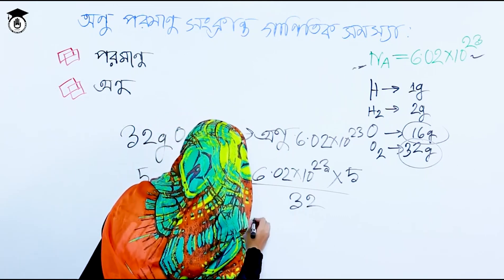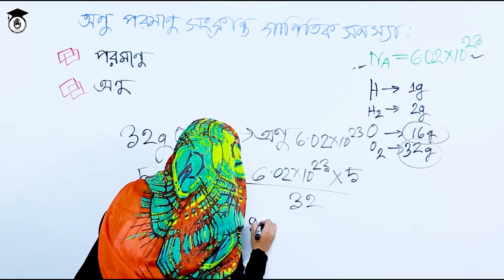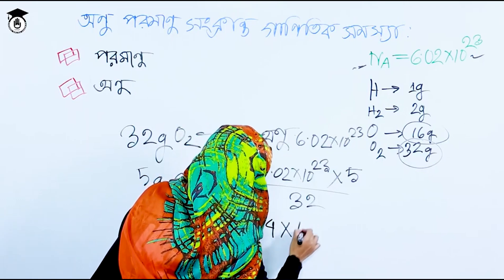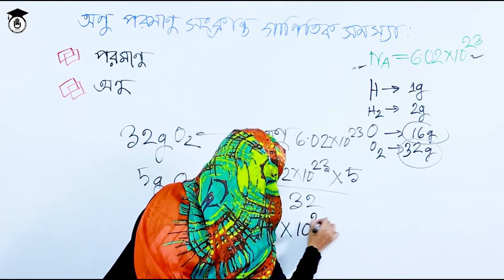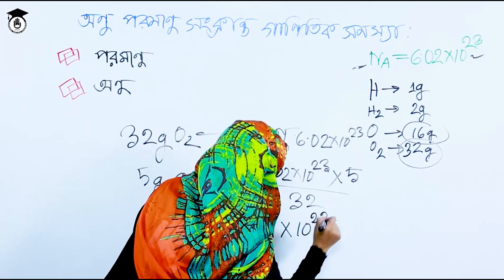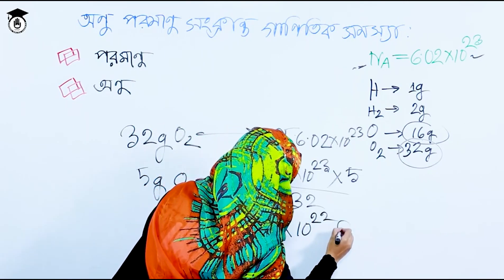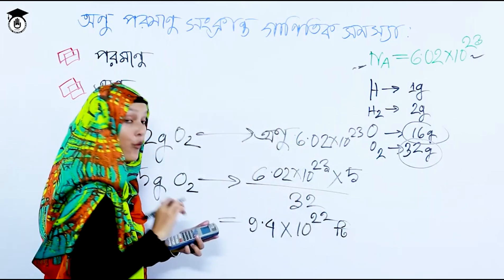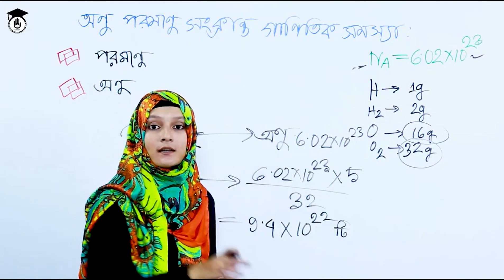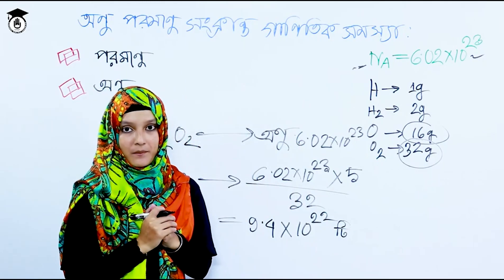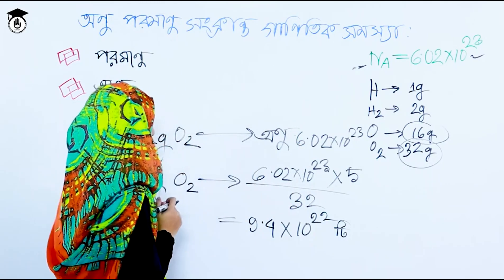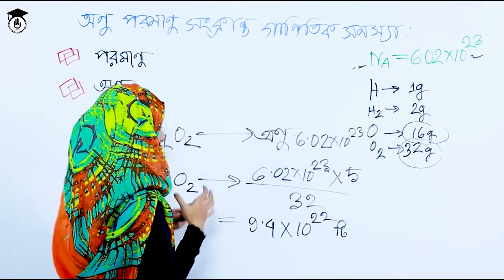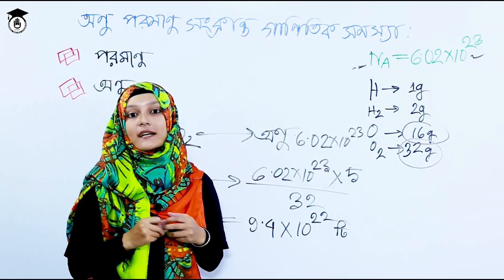The answer for 5 grams of oxygen is 9.4 into 10 to the power of 22 molecules. So 5 grams of oxygen contains 9.4 into 10 to the power of 22 molecules of O₂.